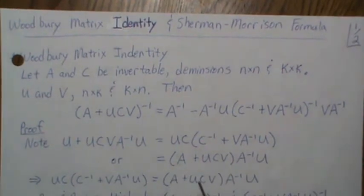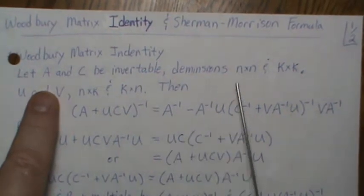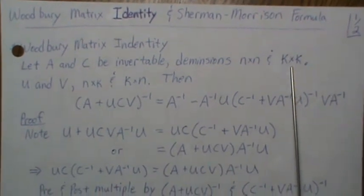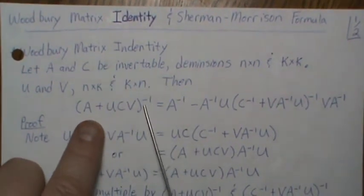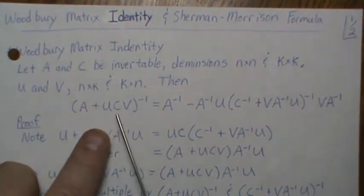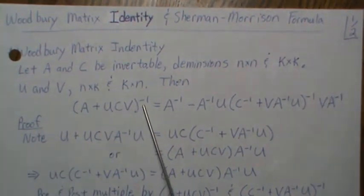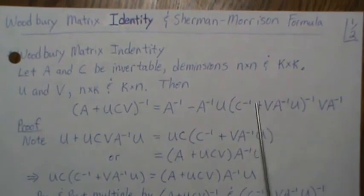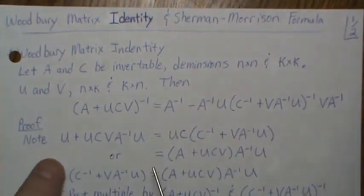Let A and C be invertible matrices of dimensions n-by-n and k-by-k. Then we have matrices U and V of dimensions n-by-k and k-by-n. The dimensions of these matrices have to work such that the multiplication and addition works. The inverse of A has to exist, and this other inverse has to exist for the identity to hold. Let's prove that.